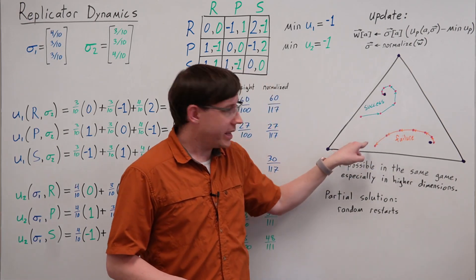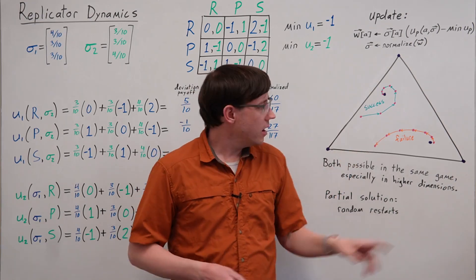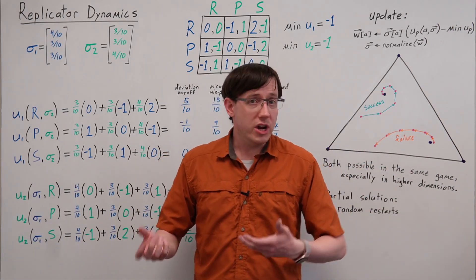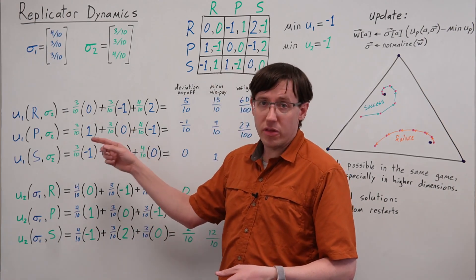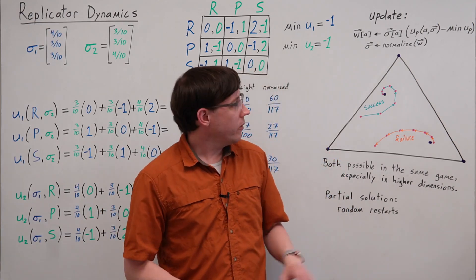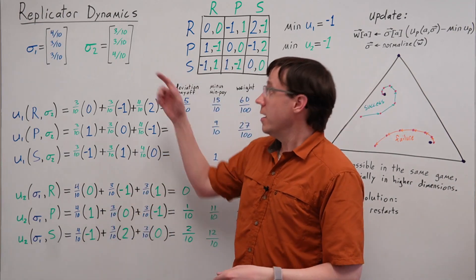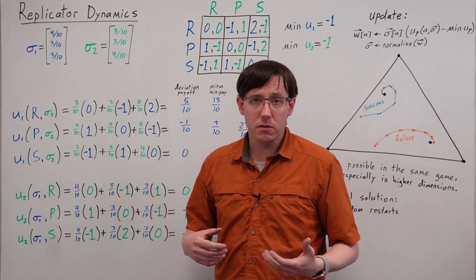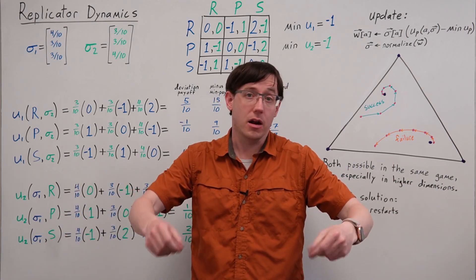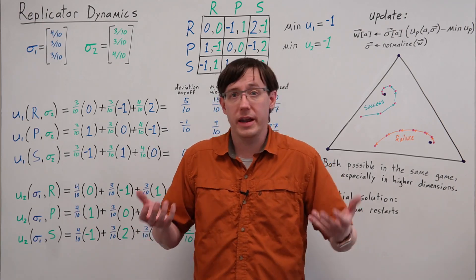But since many of the Replicator Dynamics trajectories will not get to a Nash equilibrium—they could find some other fixed point or cycle without converging—we need to check the regret of the profile we end up with after looping through many iterations. So our overall algorithm is to generate many different random initial profiles. For each of those profiles, we run many iterations of Replicator Dynamics. Then at the end, we check which of those trajectories ended at an approximate Nash equilibrium, and we return the collection of however many epsilon Nash equilibria we found.